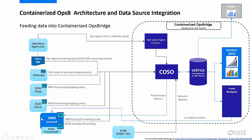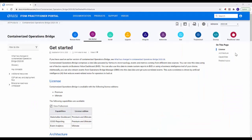OBM can receive topology, events, and metrics from data sources for processing, storage, and display, and can push events to COSO via OBM event forwarding scripts, and RTSM topology to COSO via the Pulsar adapter and a data flow probe (DFP). Network Operations Management (NOM) can collect metrics and configurations, as well as generate events when specific conditions are met, and can push metrics to COSO. For more information regarding containerized OpsB architecture and data sources, please go to the URL shown in the lower right corner of the screen. This is the containerized OpsB Get Started page, which includes more information about containerized OpsB architecture and data sources.